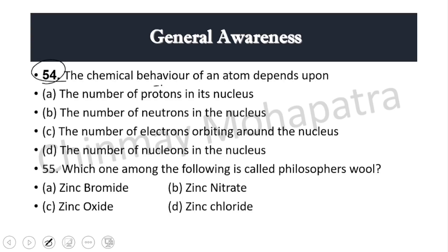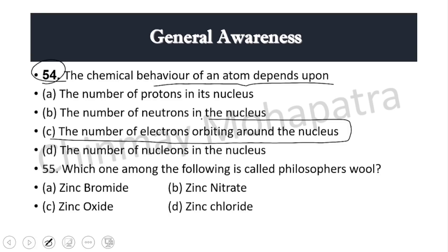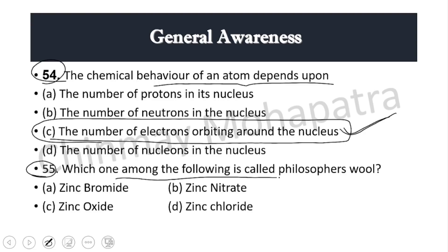Question 54: The chemical behavior of an atom depends upon the number of electrons orbiting around the nucleus. Question 55: Which one among the following is called philosopher's wool? The right answer is zinc oxide.